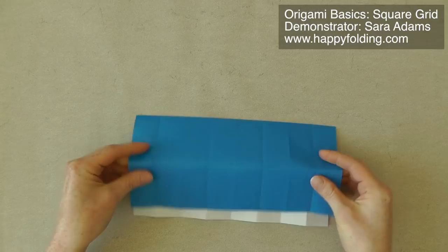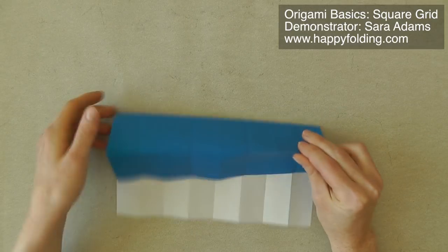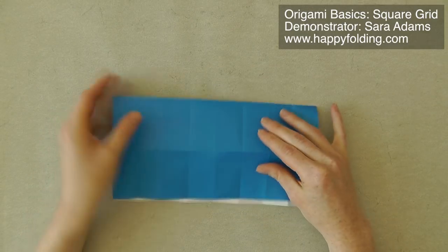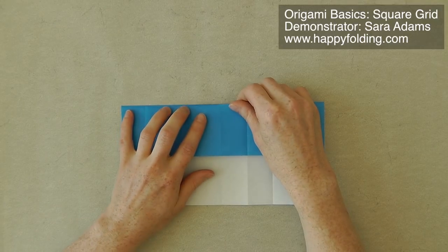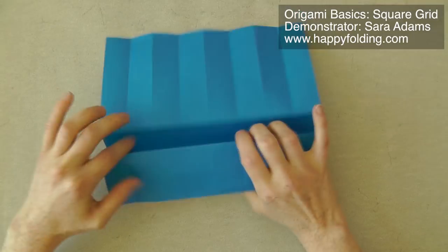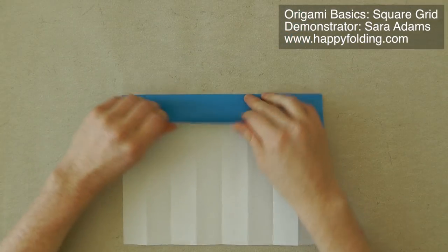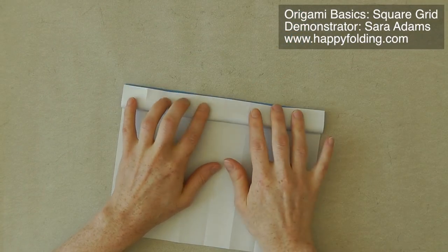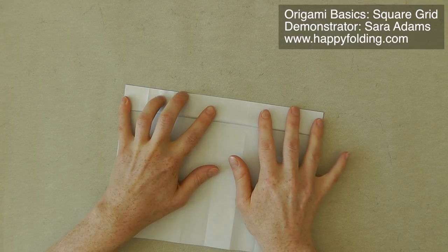And once we've got that, we're going to go on to the next one. And as you can see, here we've got edge to edge, which we're folding. Like that. And then the next one. We're always folding edge to edge.